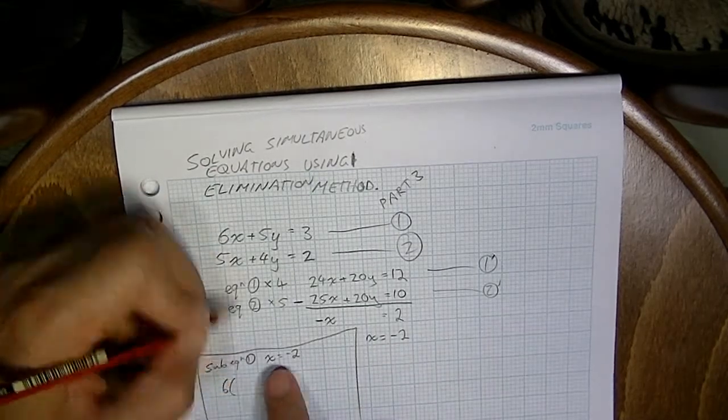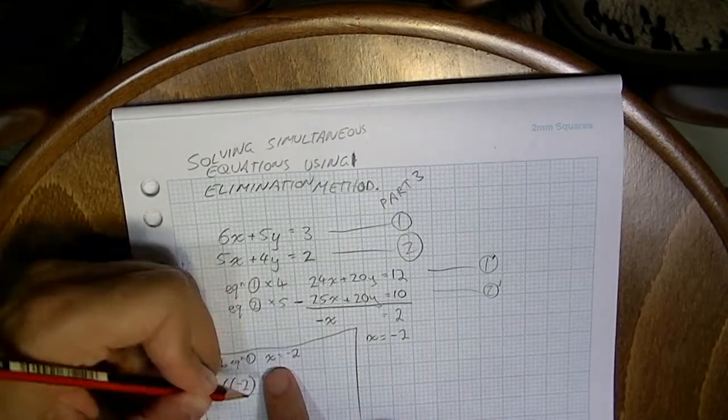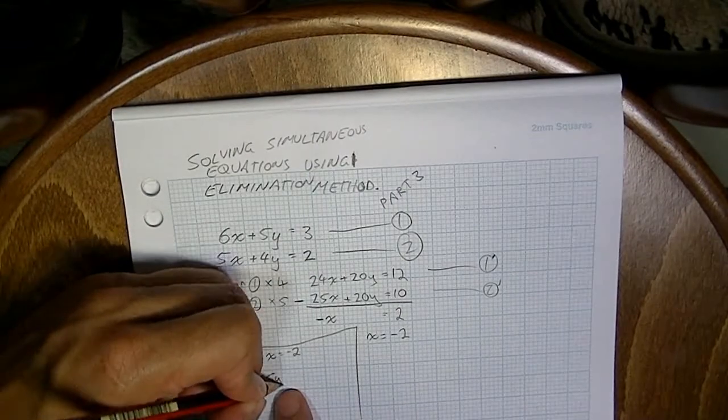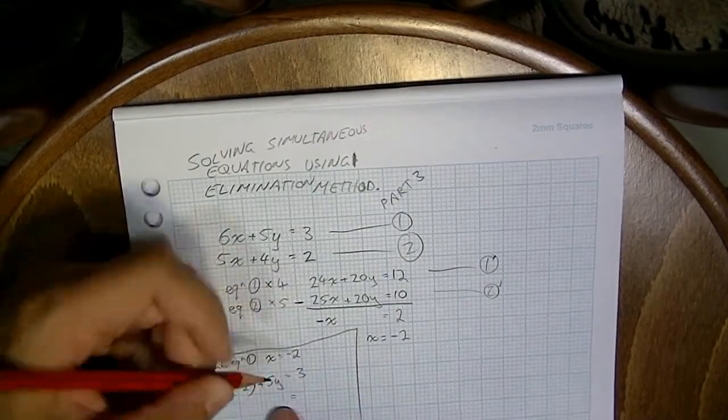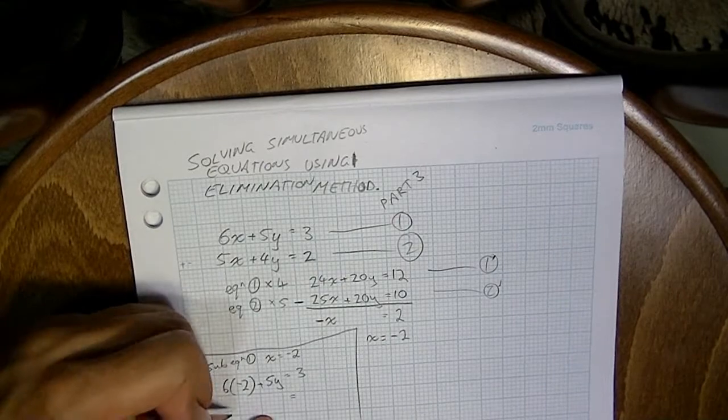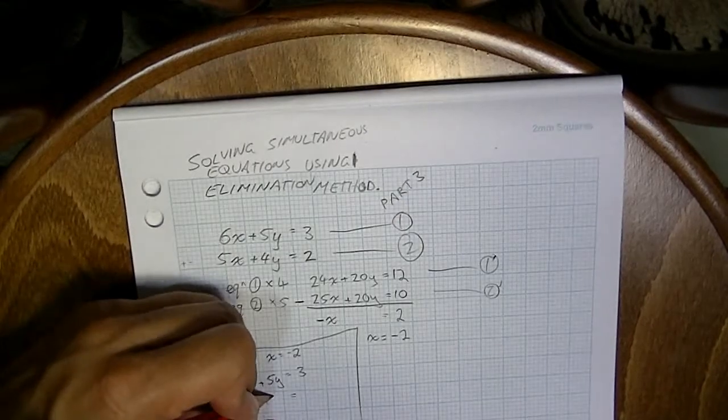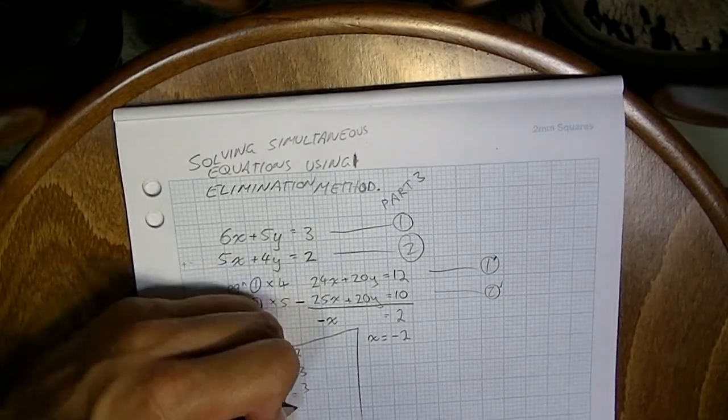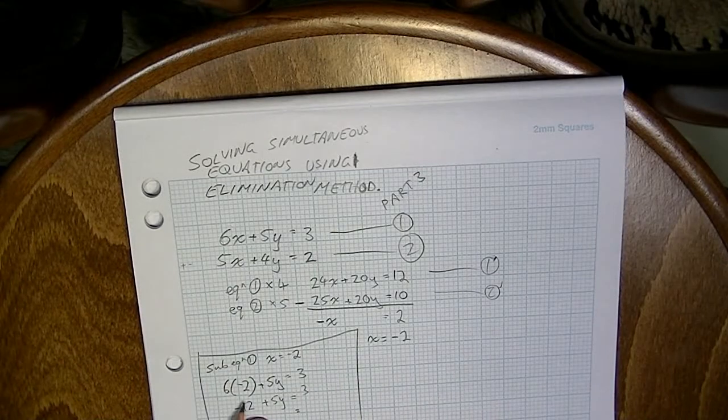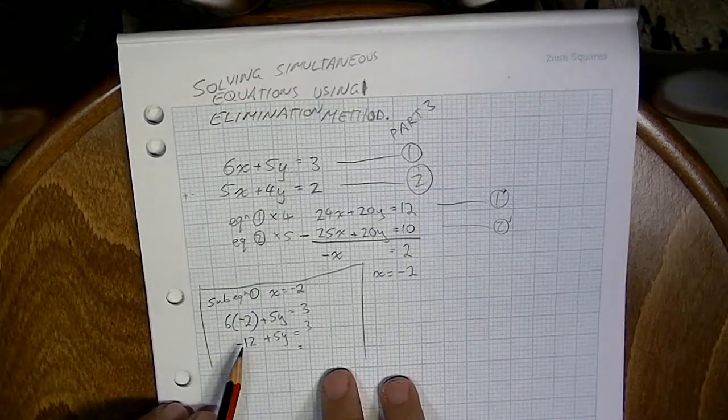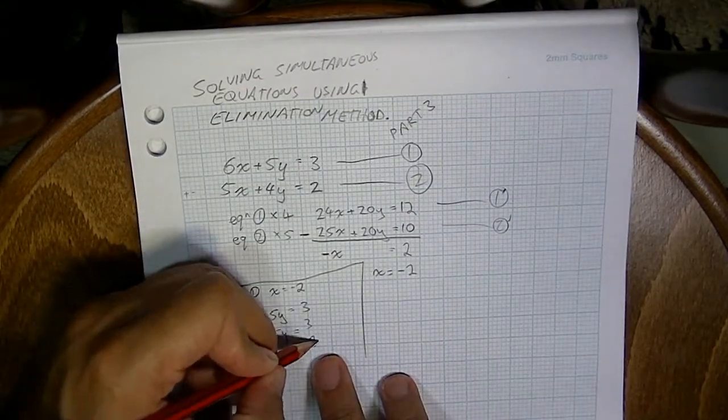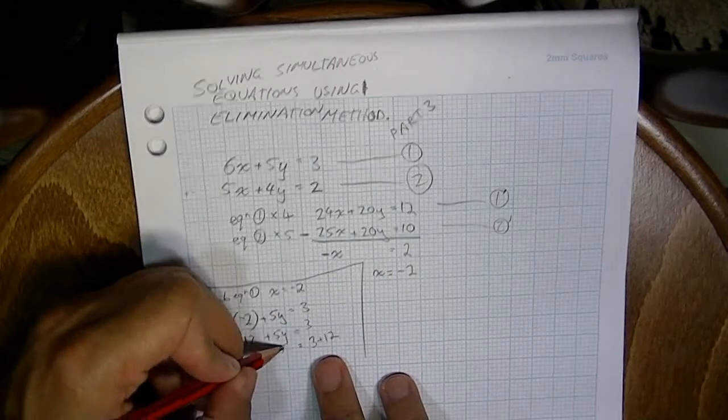So 6 times negative 2 is negative 12 plus 5y equals 3. Move the negative 12 over here, we'll end up with 3 plus 12 which is equal to 5y.